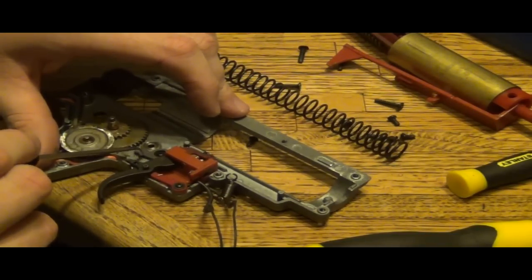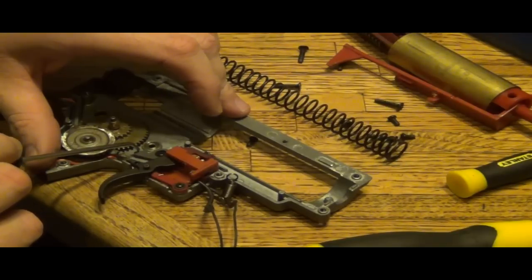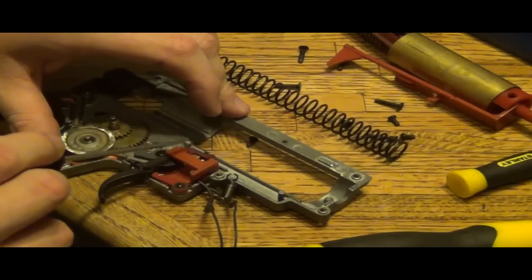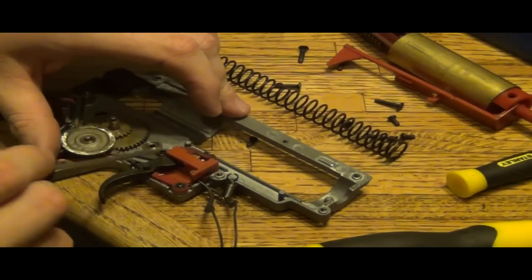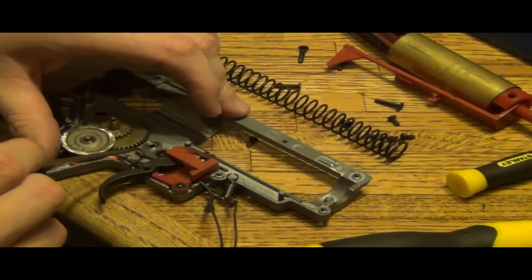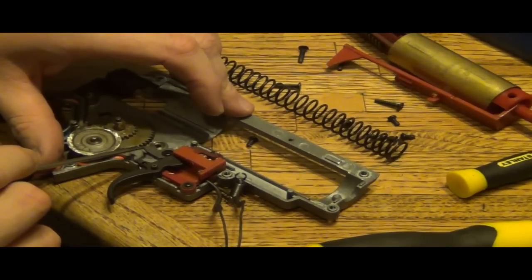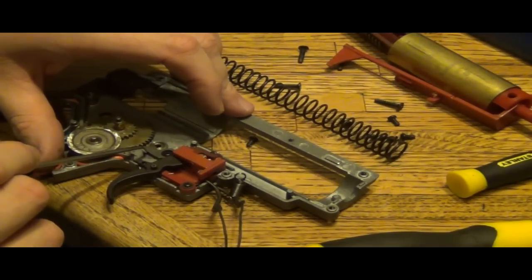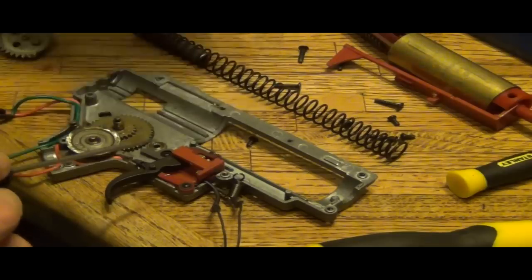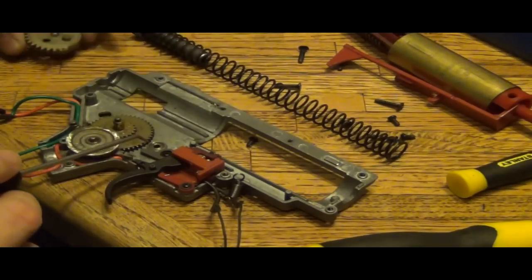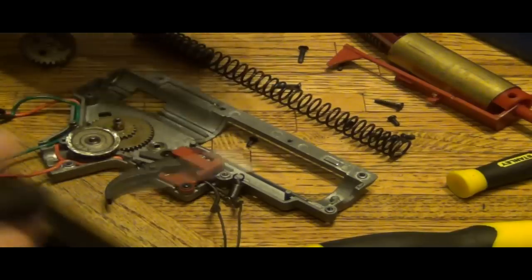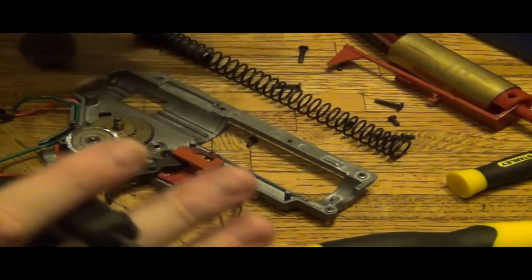When you go to full auto, what happens is the selector plate pulls up the cutoff so that the trolley has no way of being disconnected. Now when you're in semi, the cutoff plate will fall underneath the trolley arm grabbing it. When you pull the trigger, sector gear will rotate and hit the cutoff, then grab the trolley out of the way. That's how you stop every semi pull.